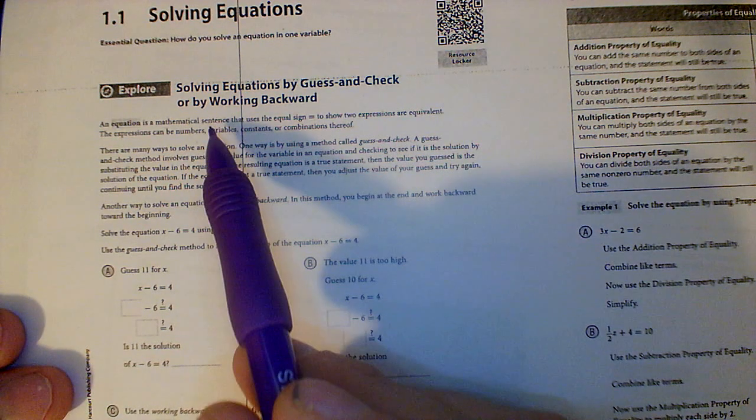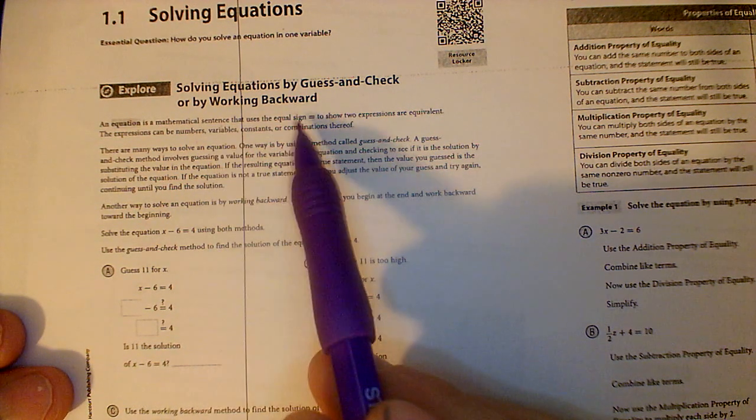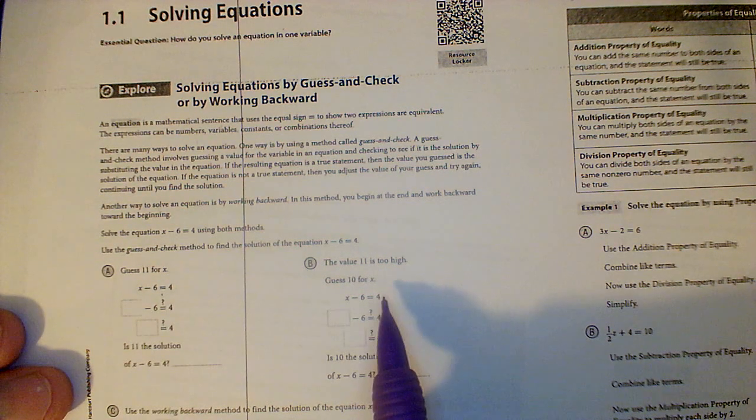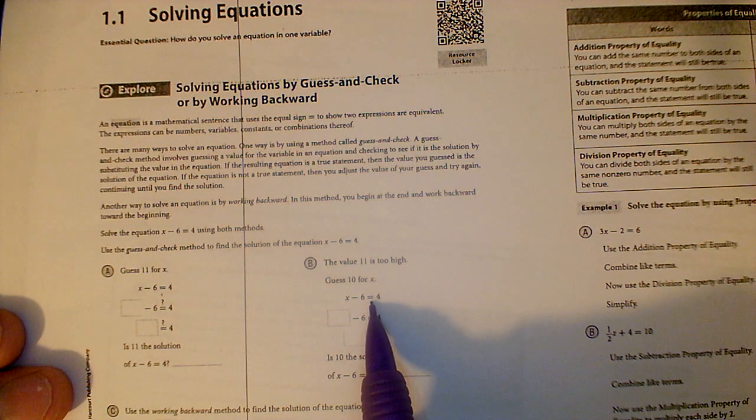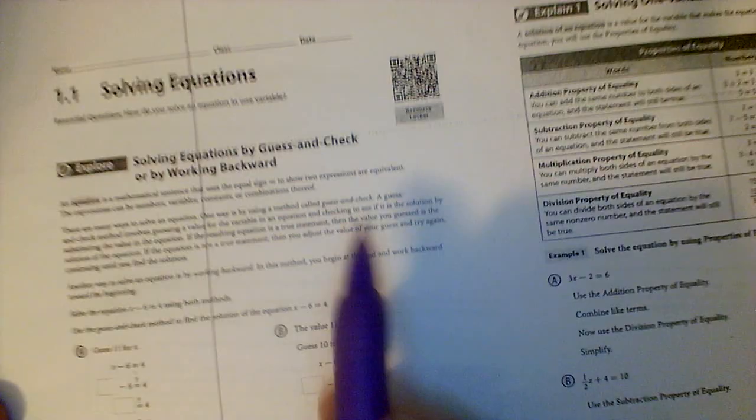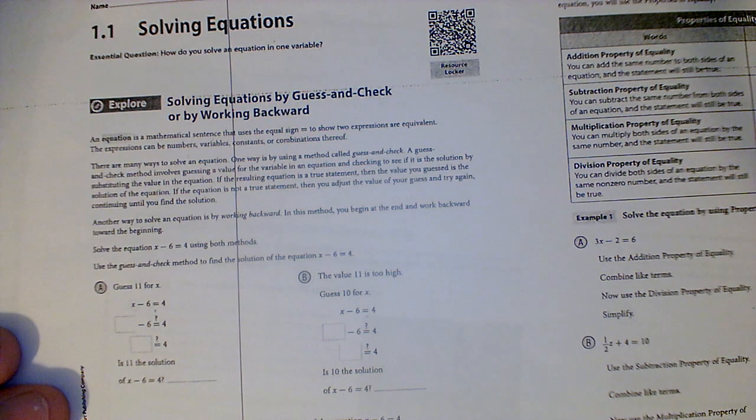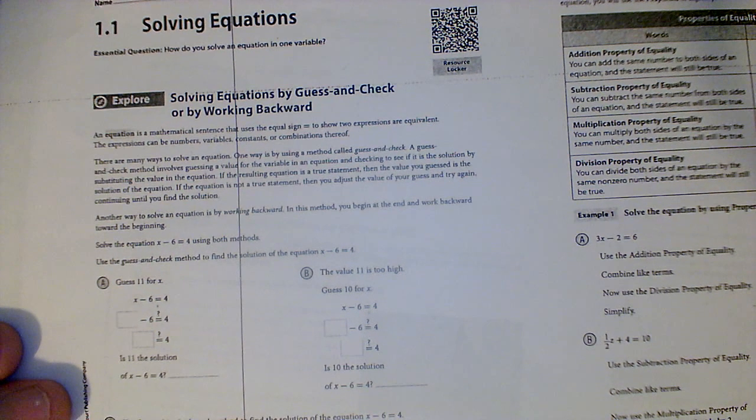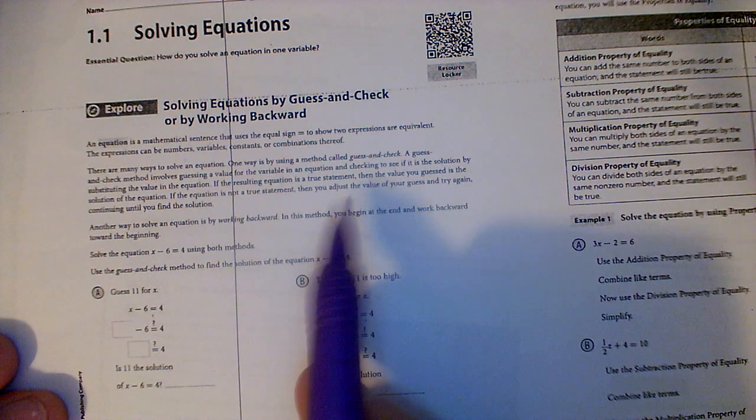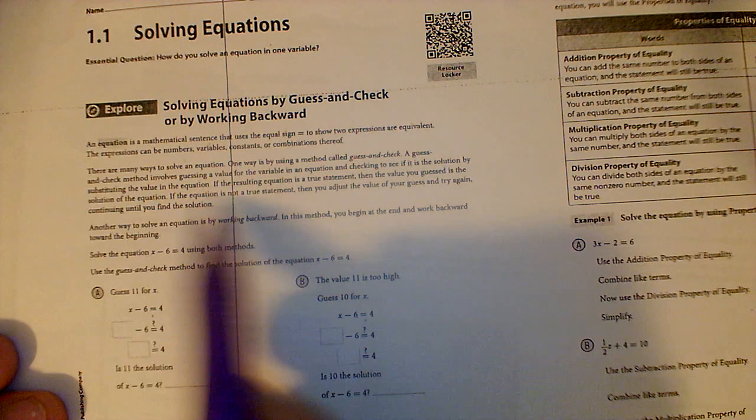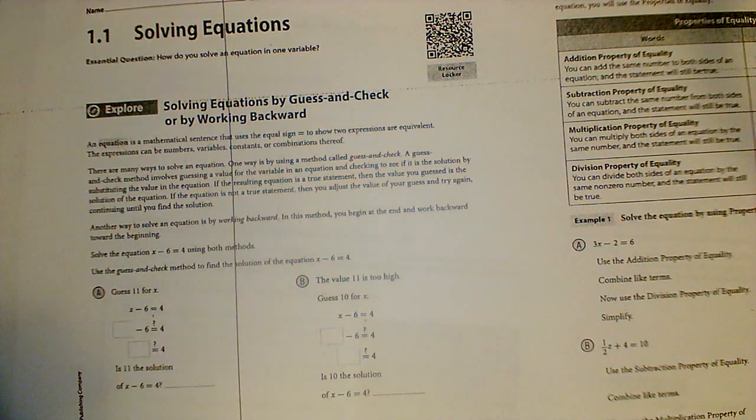It says an equation is a mathematical sentence that uses an equal sign. So we can see this is an equation, and we can see this is an equation. There's a method we have called guess and check. Guess and check method involves guessing in values that may make your variable true or not true. So if the resulting equation is a true statement, the value you guessed is the solution of the equation. If it's not true, then you didn't guess the right value.